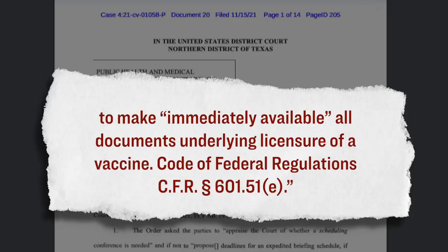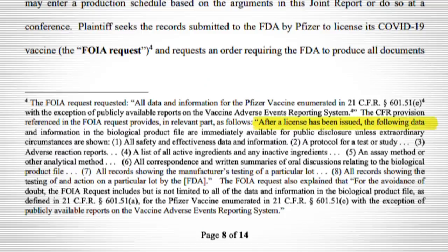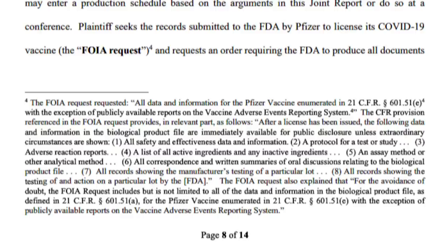This particular federal regulation that is being cited in this lawsuit, you can find it over on the FDA's website. After a license has been issued, the following data and information in the biological product file are immediately available for public disclosure unless extraordinary circumstances are shown. When you scroll down, it lists some of the data that is to be disclosed, including all safety and effectiveness data and information, adverse reaction reports, a list of all active ingredients and any inactive ingredients that have previously been disclosed to the public, and so on. The list is fairly comprehensive on the type of information that the FDA should be disclosing to the public immediately after approval.